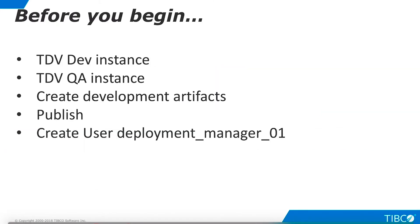Before you begin this demo, you will need to set up the environment. You will need two instances of TDV: one to represent a development instance and a second to represent a QA instance. For this tutorial, we used a development instance on localhost and a QA instance on a virtual machine. However, you can set up any topology that is most convenient for you. You must also create a user on the development instance that we will migrate to the QA instance. For this tutorial, we created an admin user named DeploymentManager01.